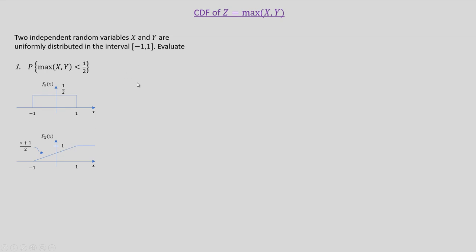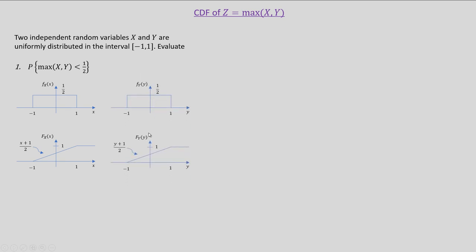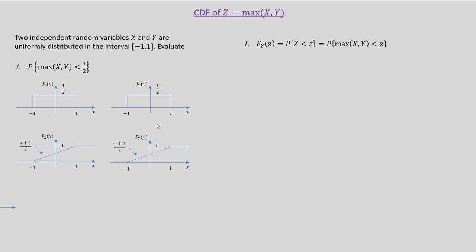As y is also given to be uniformly distributed from minus 1 to plus 1, its corresponding PDF and CDF are as given below. We are now interested in finding the CDF of the transformation z equal to max of x comma y.